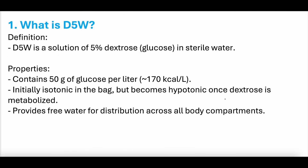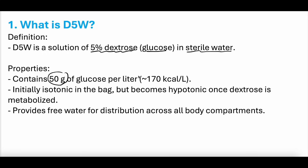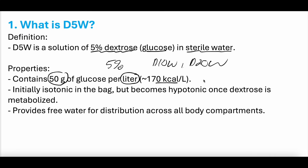D5W is a solution of dextrose — which is glucose, sugar — and sterile water. It contains 50 grams of glucose per liter of water, which is 5%. This can be adjusted to D10W or D20W. This does give you a little bit of caloric intake — really not much at all. It's been said it's less than the calories in a Snickers bar. So it is a little bit of calories, but not a lot.